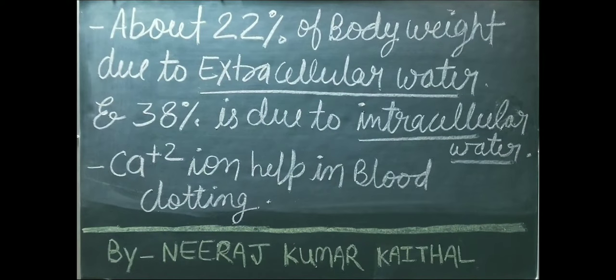About 22 percent of body weight is due to extracellular water and 38 percent is due to intracellular water. Hamare sharir ke kul wajan ka lagbhag 22 pratishat hissa extracellular water dwara aur 38 percent hissa intracellular water ke karan hota hai. Calcium iron blood clotting mein help karte hain. Calcium ko hum clotting factor number 4 ke naam se bhi jaante hain.